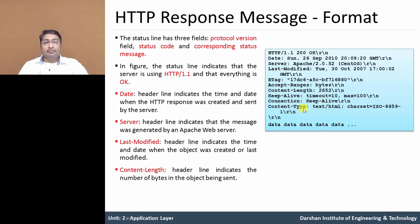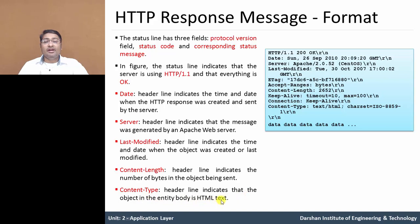Next one is content type. The content type header line indicates that the object in the entire body is in the format of HTML text, and the character set is the ISO standard. After completion of this message, the carriage return and line feed characters — slash R and slash N — fill the end of all body message lines, followed by the actual data, which is the HTML file.